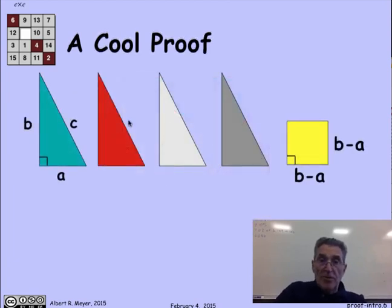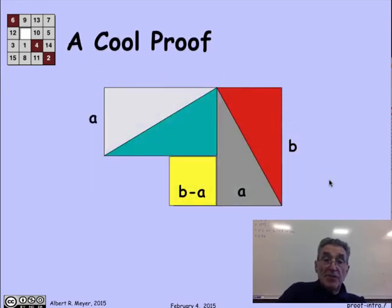And that's what we've indicated here. Now, the next arrangement is the following. We're going to take two of the triangles and form a rectangle, another two triangles and form a rectangle, line them up in this way, and fit the b minus a by b minus a square there.